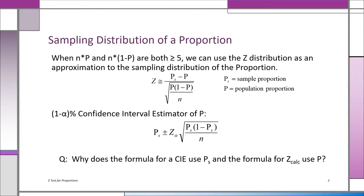Now let's look at the formula for a confidence interval estimator of p with 1 minus alpha — for instance, maybe 90% or 95%. The sample statistic, like before, is smack in the middle of the interval — that's the sample proportion ps — and then plus and minus the half width of the confidence interval. We take ps, add something on one side and to the other side, and that's our interval estimator for the population proportion p.